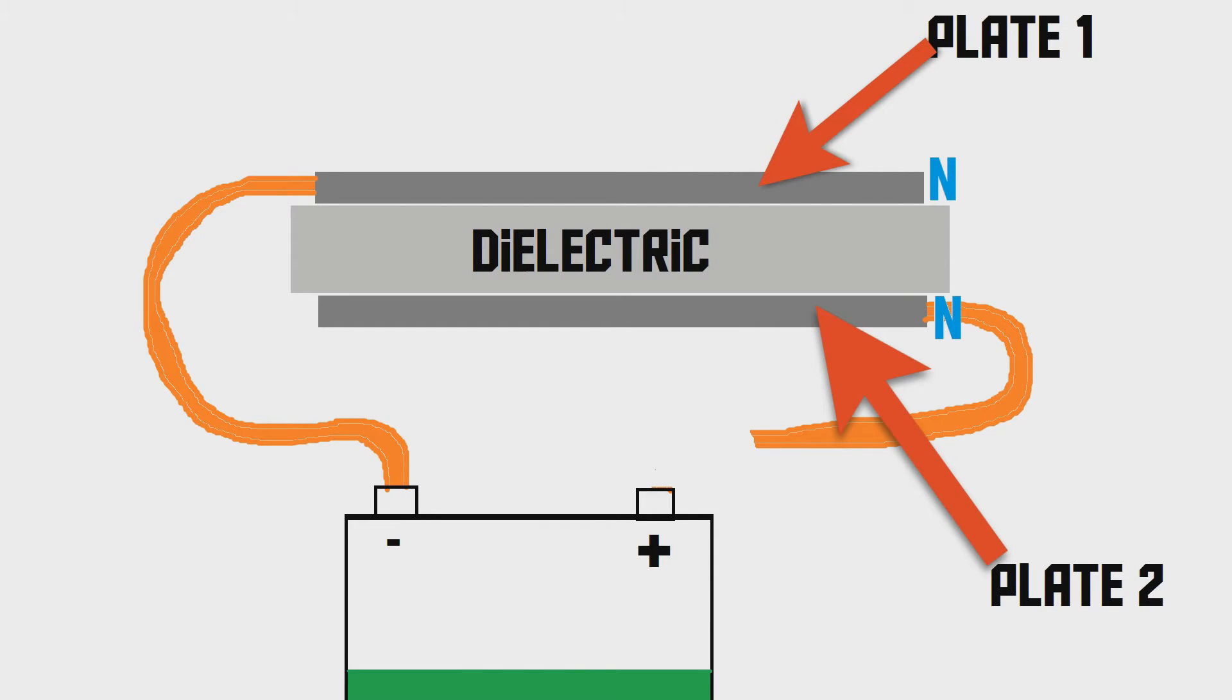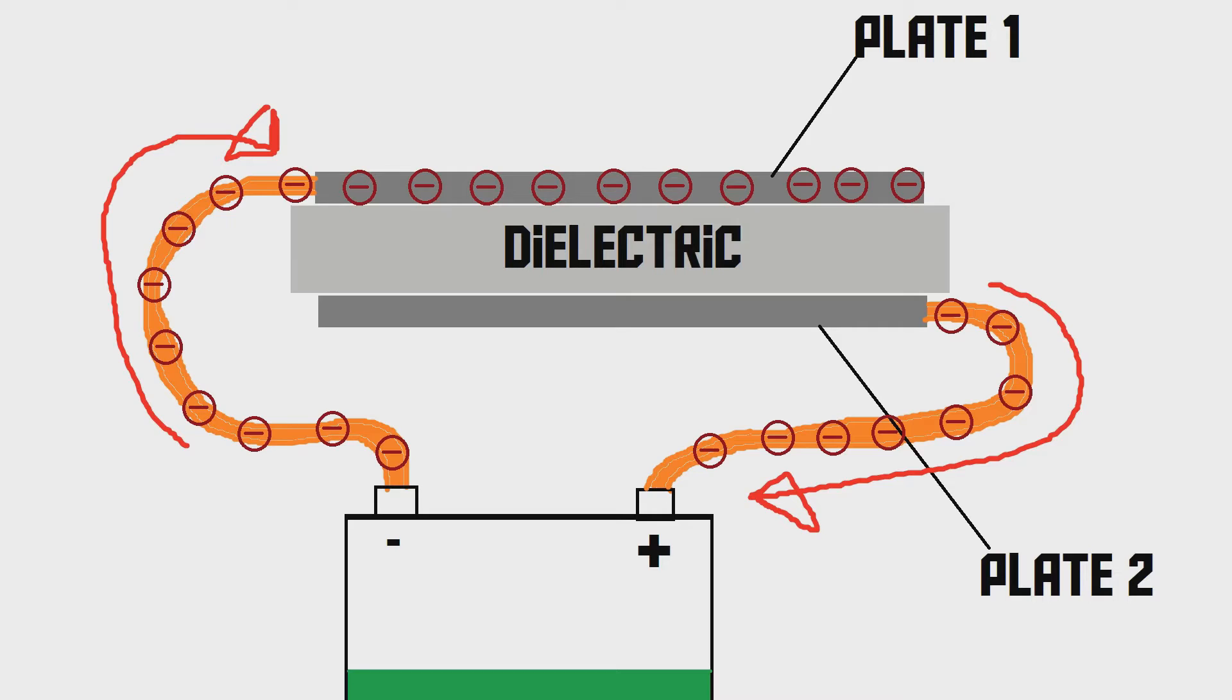This is what is going to happen. From the negative side of the battery, electrons are going to flow into plate number one. Now, of course, every material has electrons inside. Also, plate one has electrons inside. But now, all those extra electrons from the negative side of the battery get squeezed into it, so it gets full of electrons. It gets too many electrons inside it. This means that it's not going to be neutrally charged anymore. It's now going to be negatively charged, because it has all those negative electrons inside it.